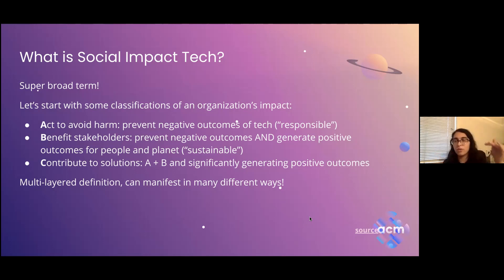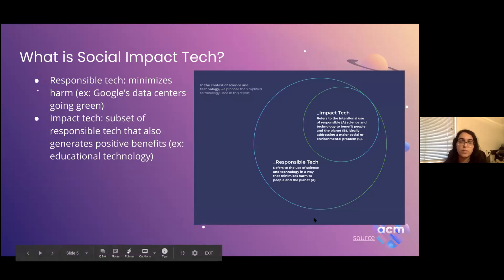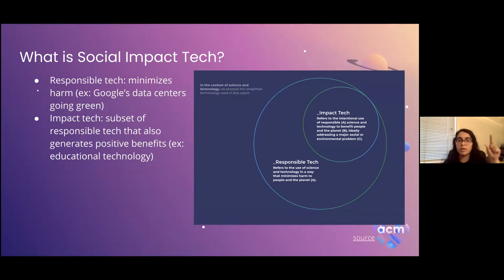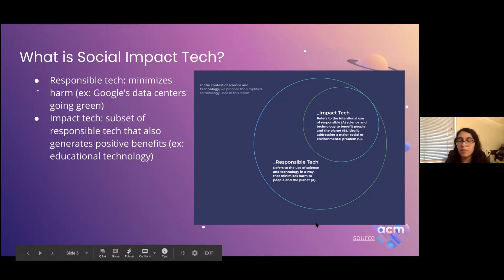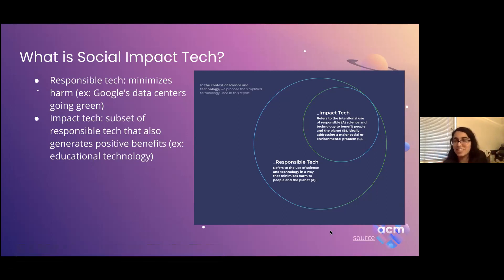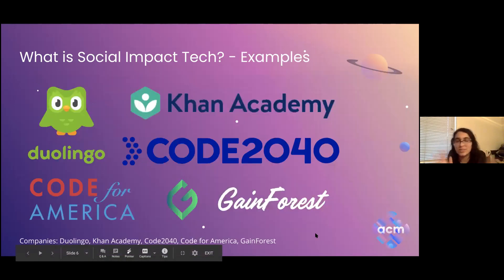This is a theoretical framework, and the next slide has some examples. The difference again between responsible tech and impact tech: responsible tech minimizes harm — for example, Google's data center going green is a responsible tech decision. But beyond that, impact tech is the subset of responsible tech that also generates positive benefits, like educational technology. There's a diagram that's a cool visualization of responsible tech and impact tech as a subset of that.